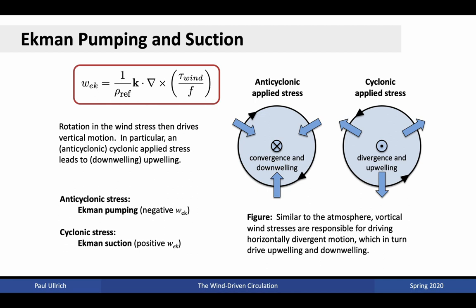What does this equation imply? The k dot curl term has appeared before in our discussion of vorticity. If we have flow rotating counterclockwise, that is associated with positive vorticity; clockwise rotation is associated with negative vorticity. There is also a Coriolis term, the 1/f term. This implies that whenever we have an anticyclonic applied stress — clockwise in the northern hemisphere and counterclockwise in the southern hemisphere — this k dot curl term will be negative. Conversely, cyclonic rotation yields a positive k dot curl term.